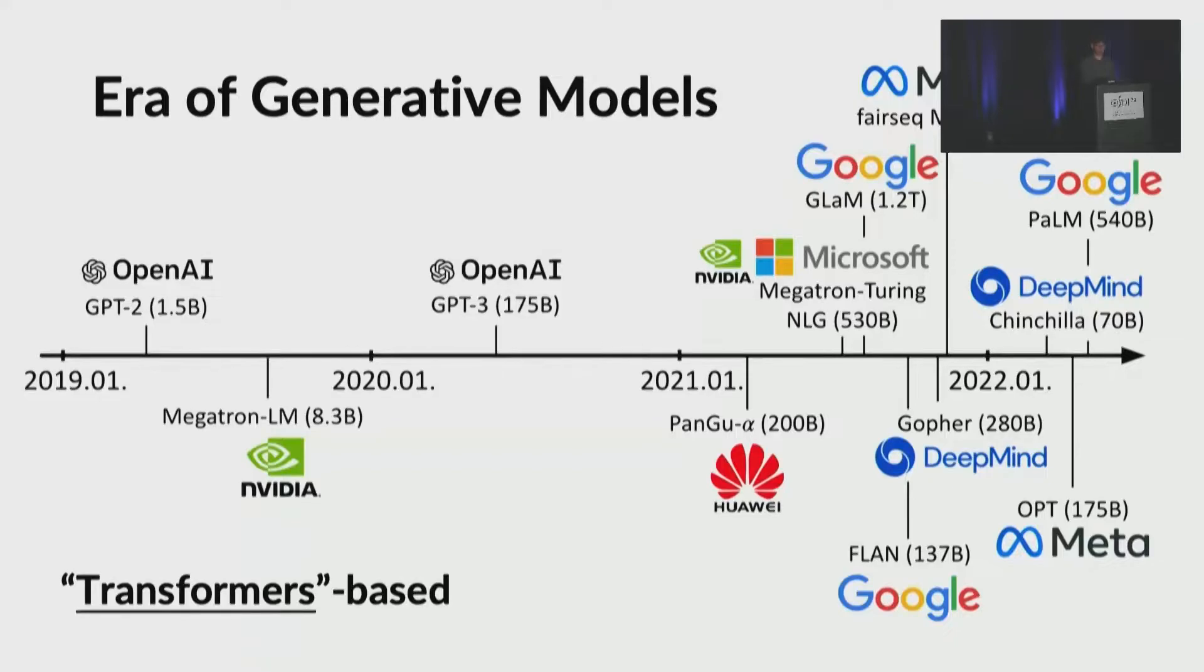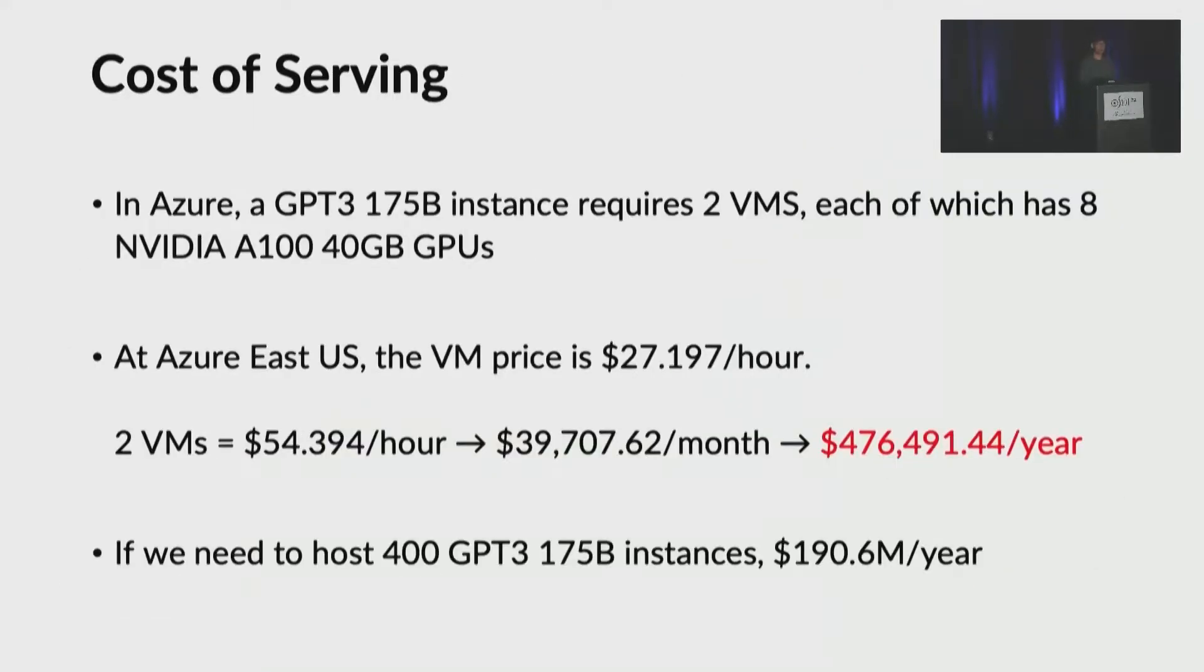All of these models are based on transformers. These models are very powerful, but they come at a high cost. First of all, model training can be very challenging and costly, but serving the models has even harder challenges. If we assume that handling one GPT-3 175 billion model instance requires 16 A100 GPUs in Azure, the cost for one year is about half a million dollars. If we are serving 400 instances, the cost becomes burdensome, reaching over 190 million dollars per year.